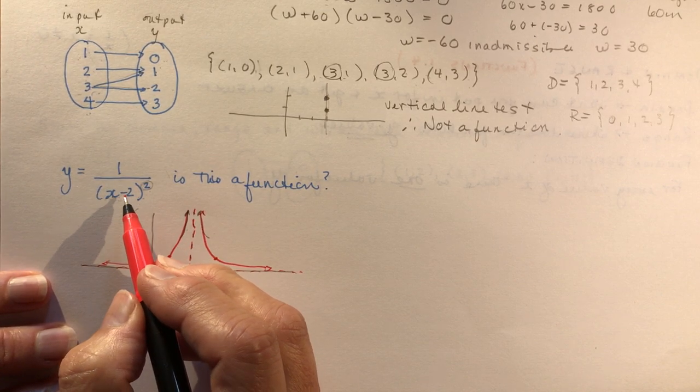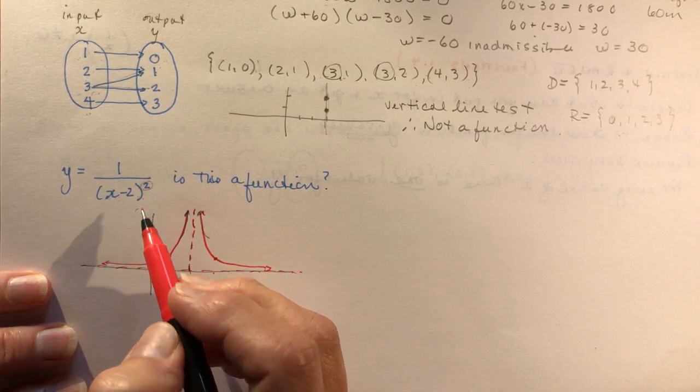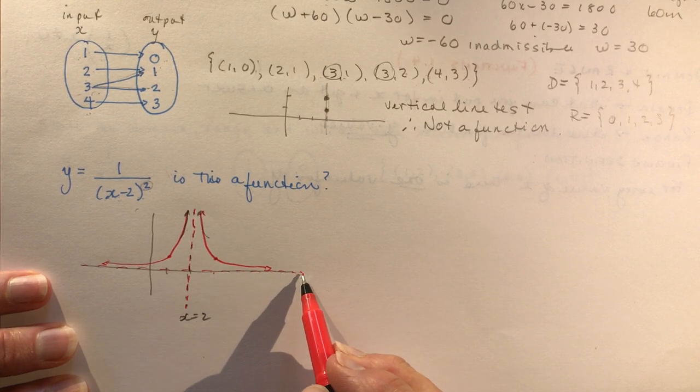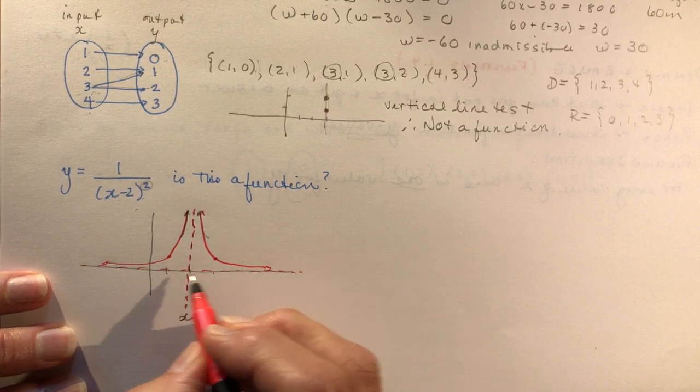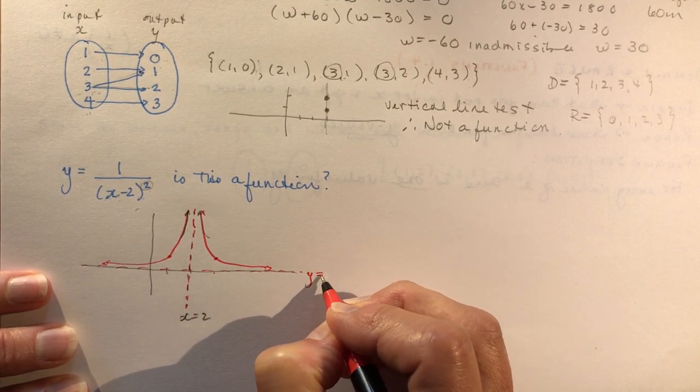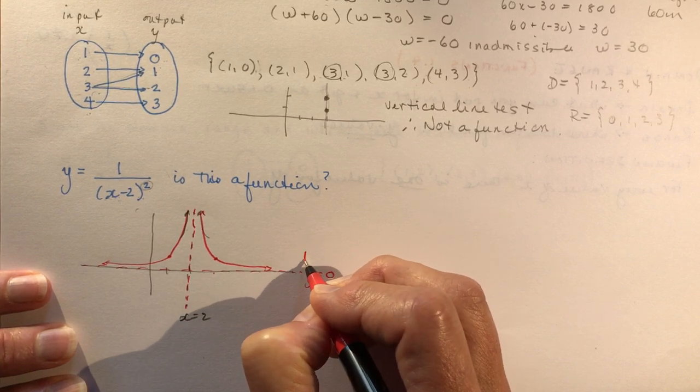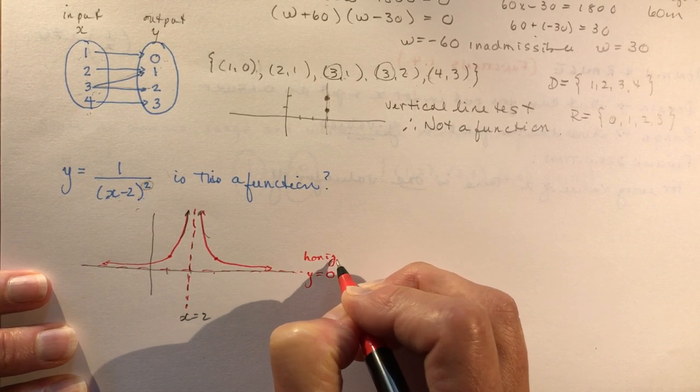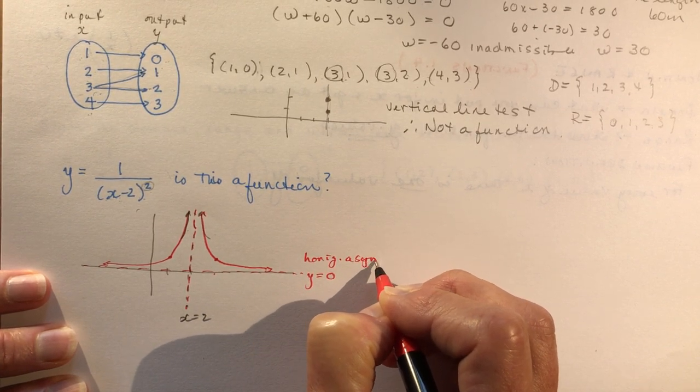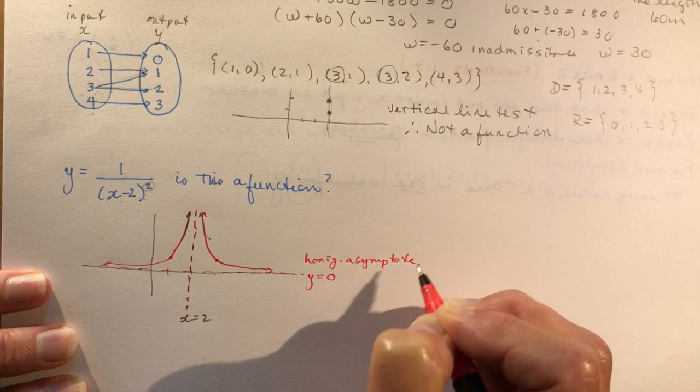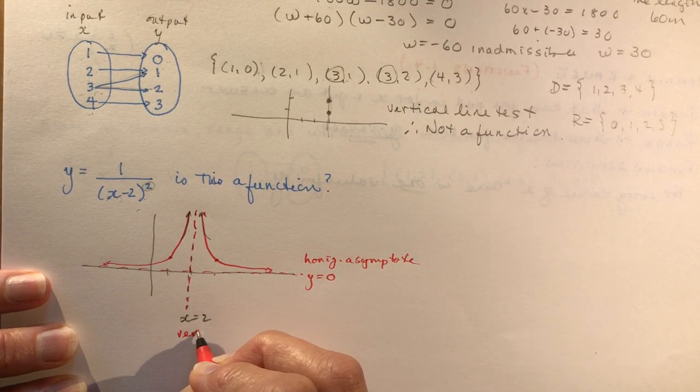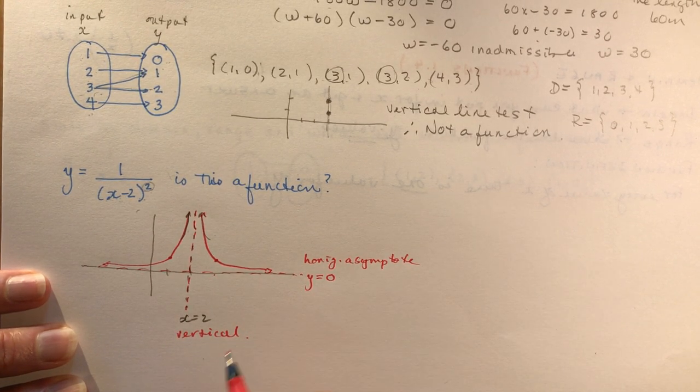If I divide one by a hundred I'd have 0.01. If I divide one by a thousand, point zero zero one. So these approach the axis, they never cross. So we have y equals zero for this horizontal asymptote. Horizontal asymptote. And this is my vertical.